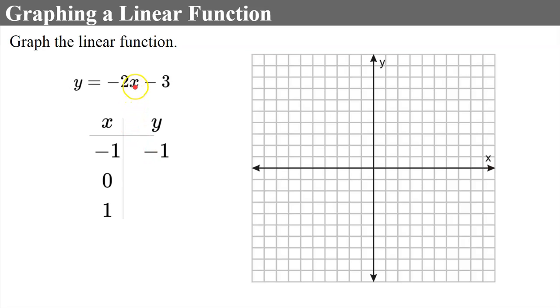Now we're going to plug in 0. Negative 2 times 0 is 0. Subtract 3 is negative 3. Plug in 1. Negative 2 times 1 is negative 2. Minus 3 is negative 5. Now we're ready to graph our points. Negative 1, 1. 0, negative 3. And 1, negative 5. And we can connect those with a line and that's our linear function.